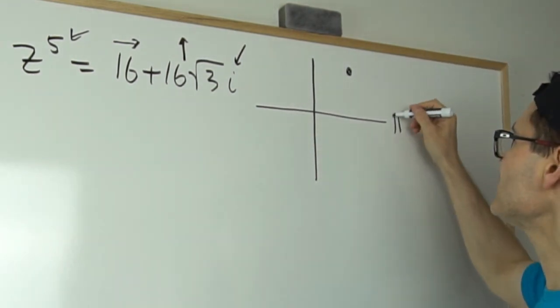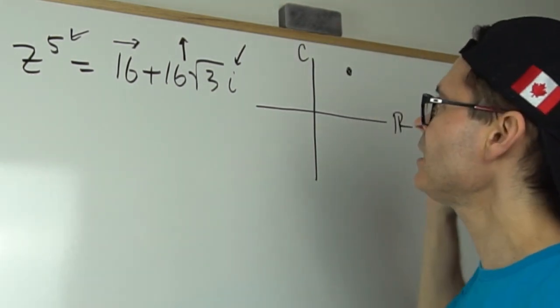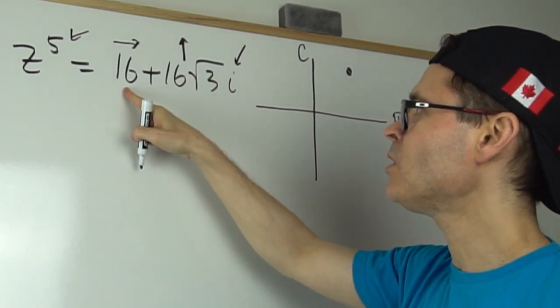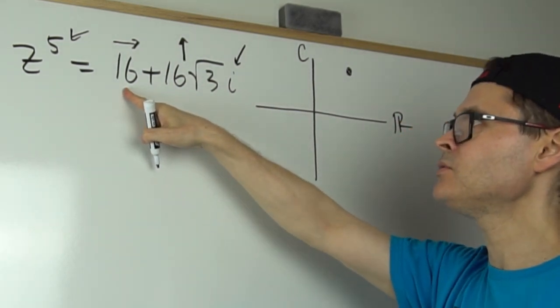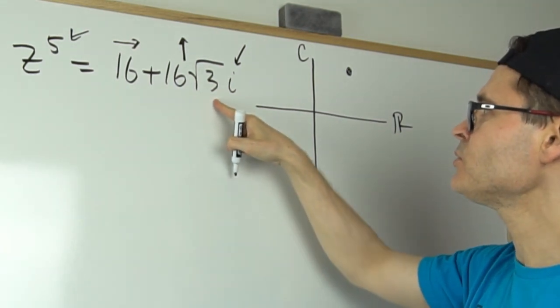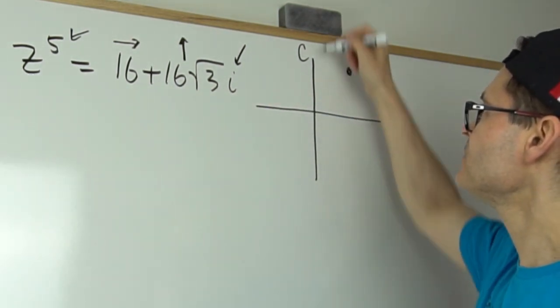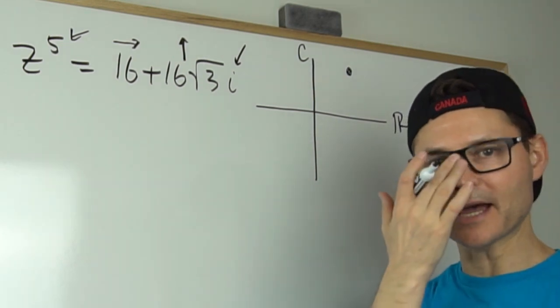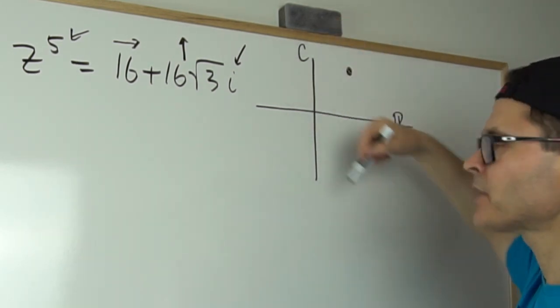This is the real line and this is the complex line. So the first value on its own is the real value, just like any number. And the 16√3 is along the i-axis or the complex axis. This is called an argand diagram.